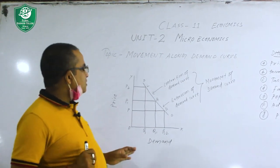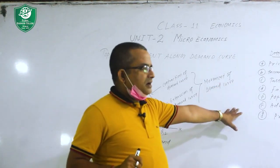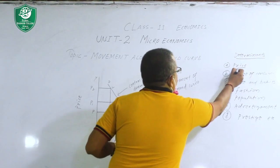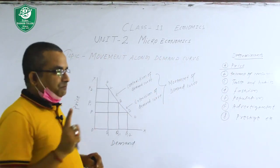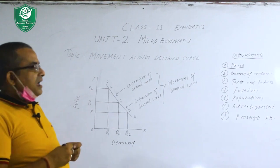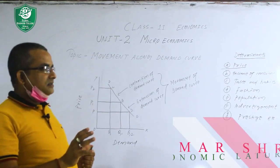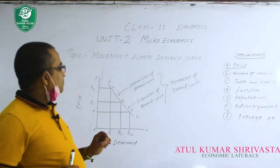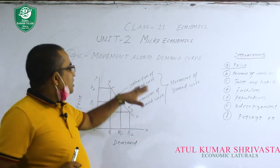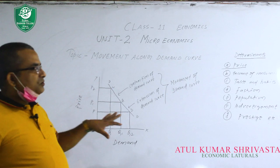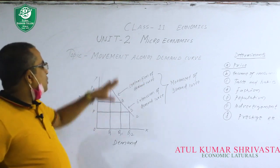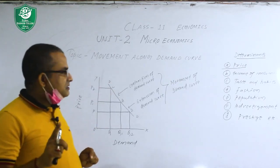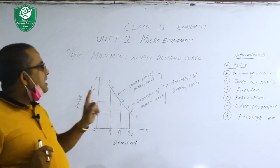However, the topic we are studying — movement along the demand curve — does not explain other determinants. The movement along the demand curve only explains what happens due to price. It is related to price: when the price of any goods increases or decreases, what will happen to the demand?